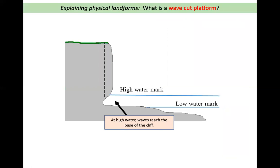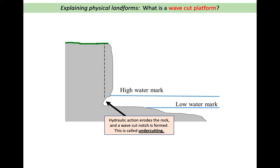So how does a wave-cut platform form? Here is our cliff and here is the base of the cliff. Here is where the low water comes to and here is where the high water comes to. So at high water, waves reach the base of the cliff. Hydraulic action erodes the rock and a wave-cut notch is formed — this is called undercutting. So hydraulic action causes the rock to be eroded away, forming a wave-cut notch like a little mini cave, and this undercuts the cliff. Really important word to note.